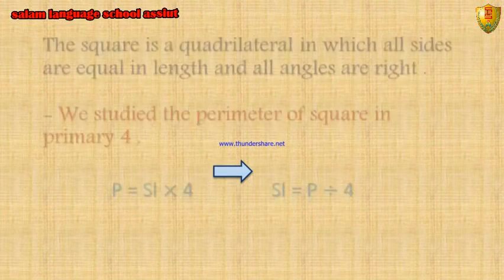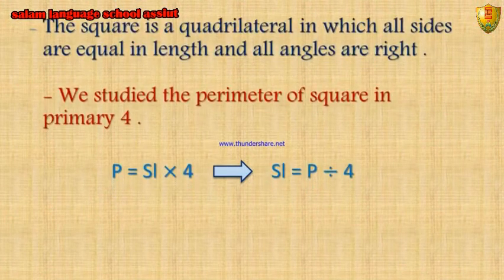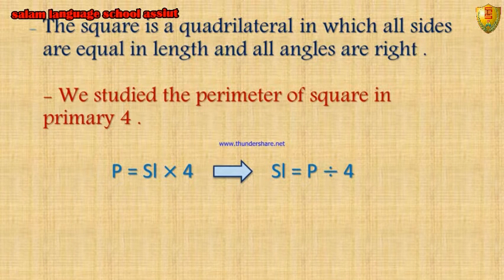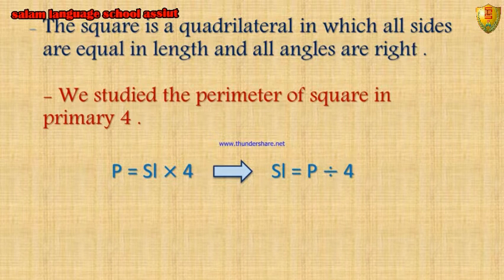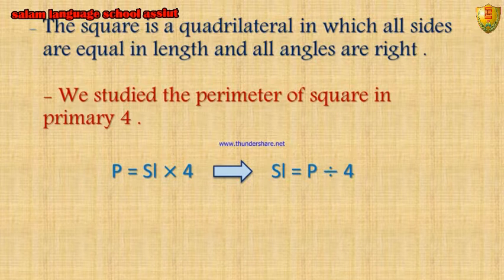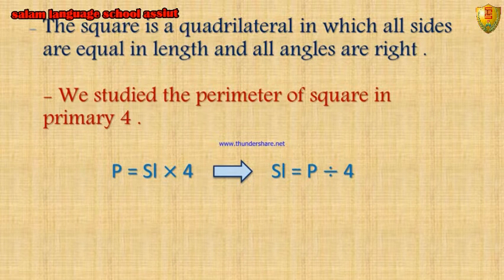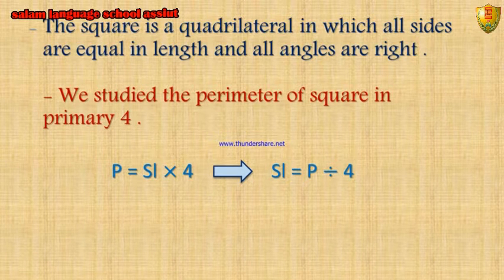What is the square? The square is a quadrilateral in which all sides are equal in length and all angles are right. We studied the perimeter of square in primary 4. Perimeter equals side length times 4, and then we can get the side length: side length equals perimeter divided by 4.